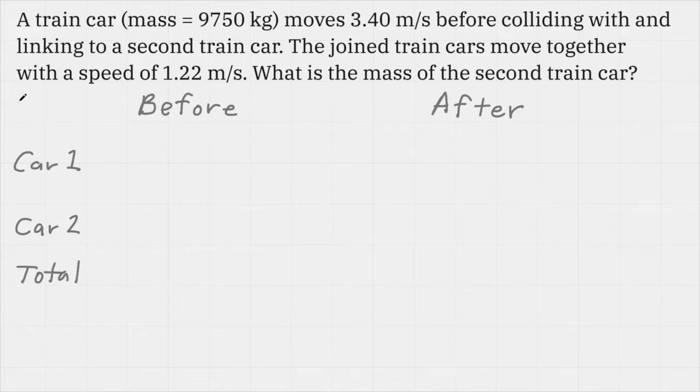Remember the formula for momentum is mass times velocity. Before the collision we have a train car with a mass of 9750 kilograms moving 3.40 meters per second.